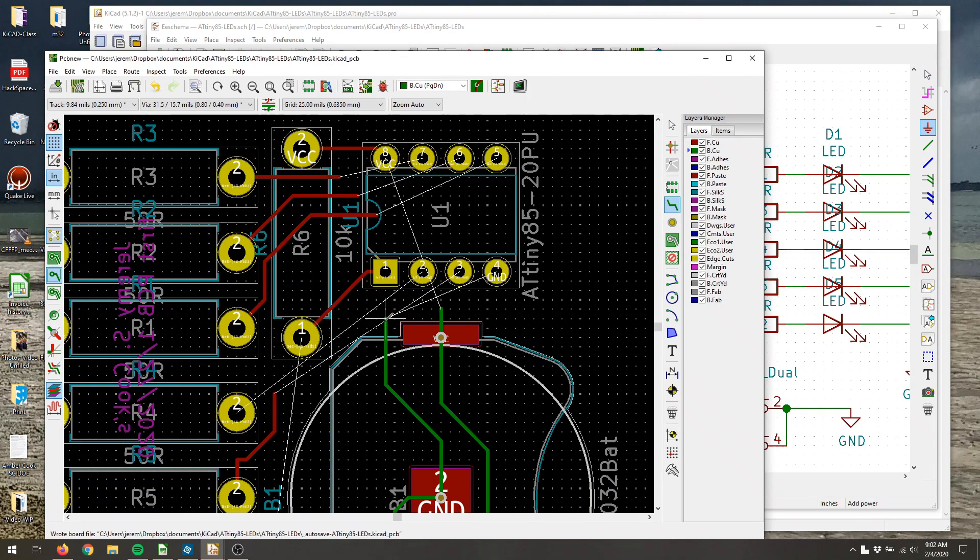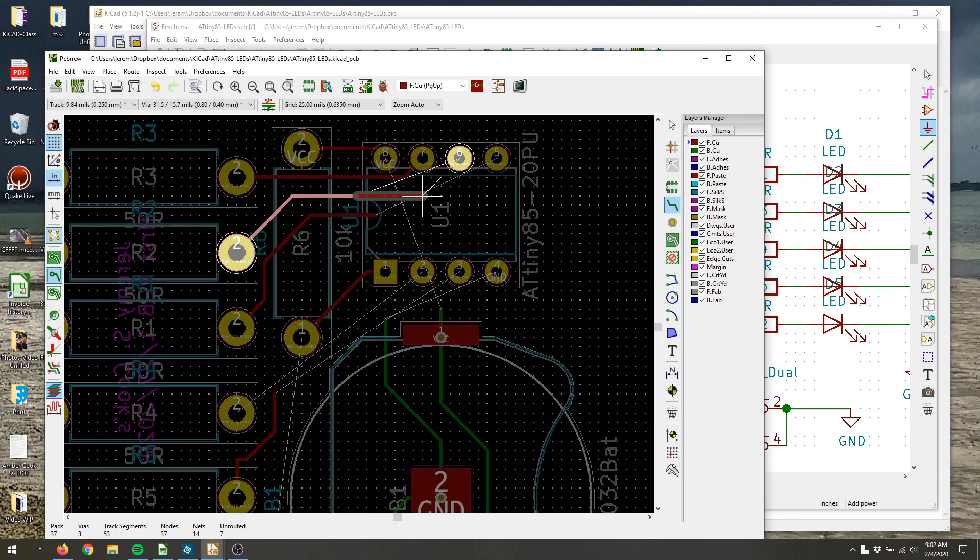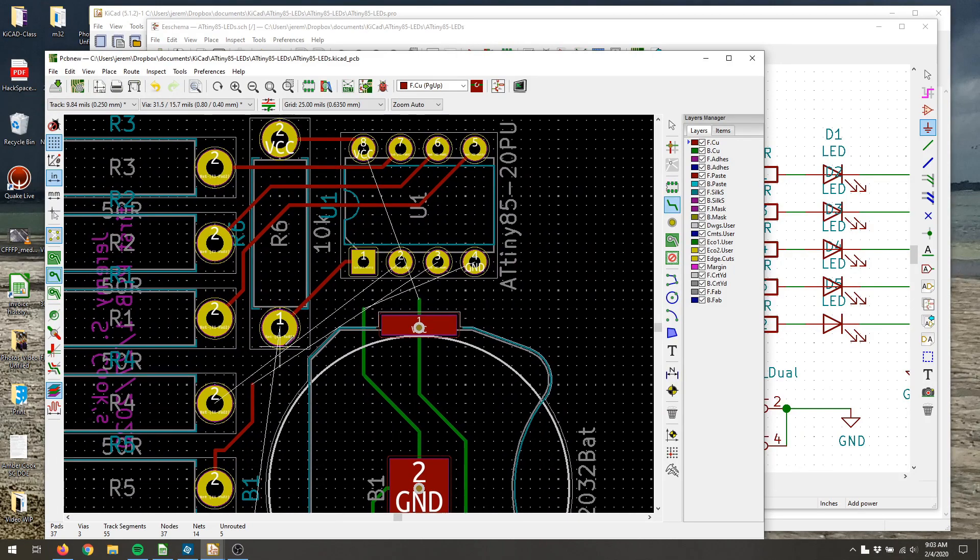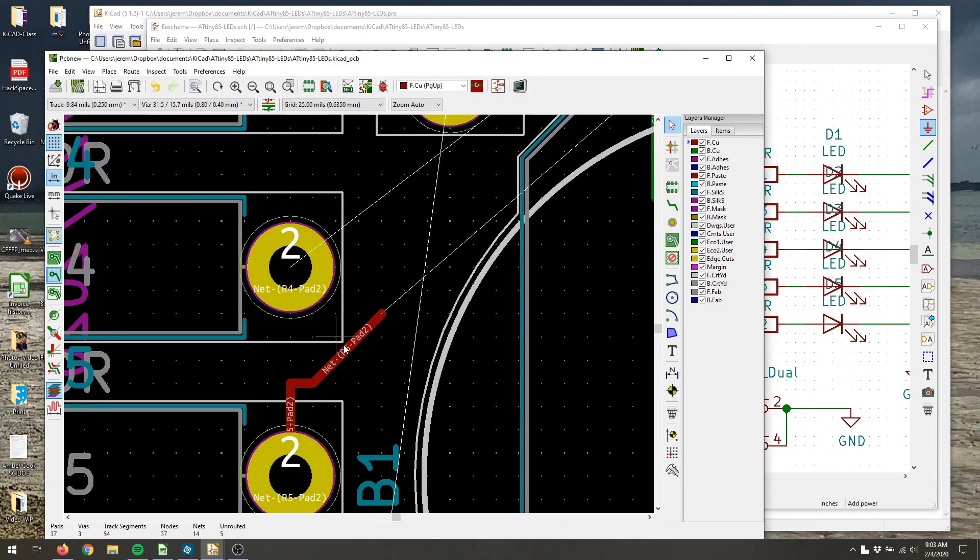But the interface you're seeing here is KiCad, and what I'm doing here is taking the white connections and actually routing the tracks, turning these theoretical drawings that are made in a schematic into actual tracks that a machine makes.